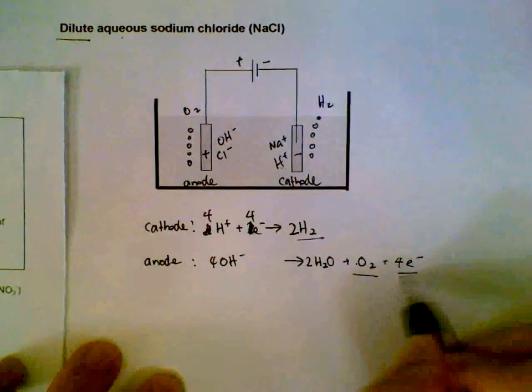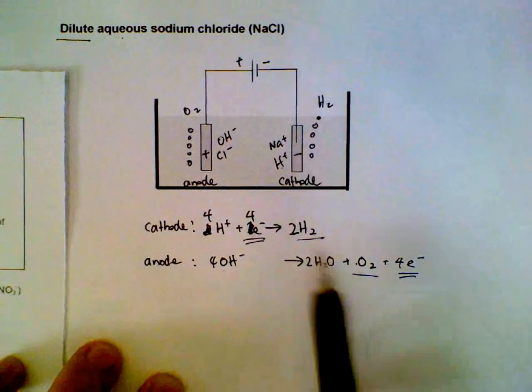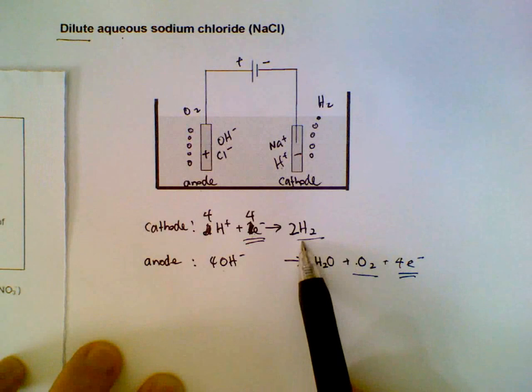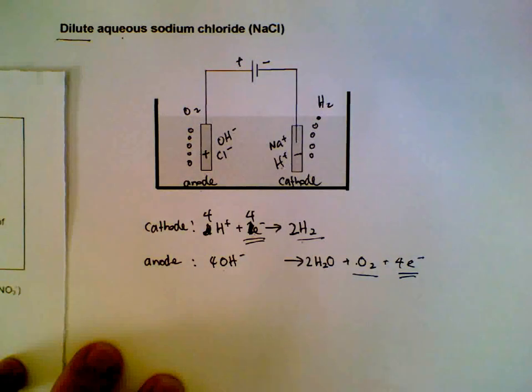Then we can compare. We can see that for every 2 moles of hydrogen gas, we will get 1 mole of oxygen. There's a 2:1 ratio that we'll get when we electrolyze dilute sodium chloride.